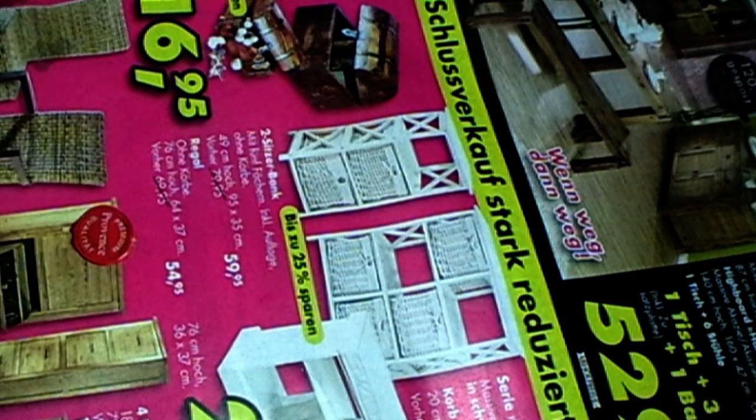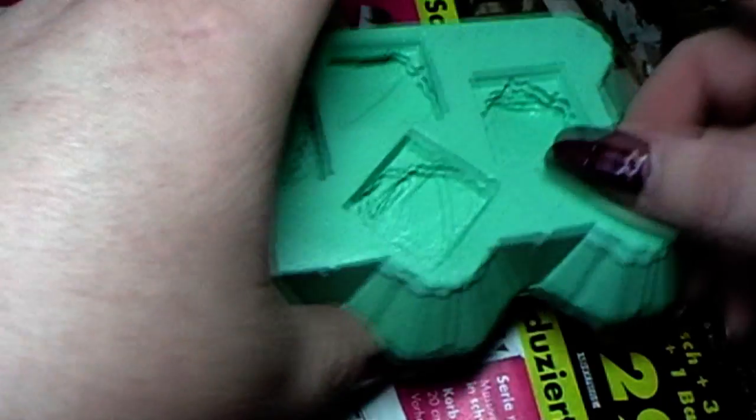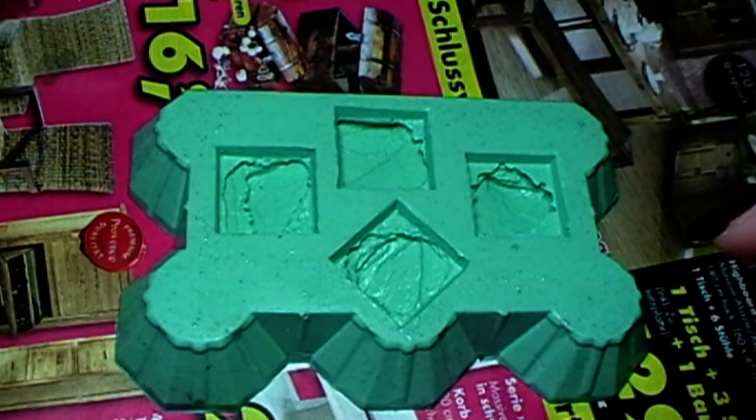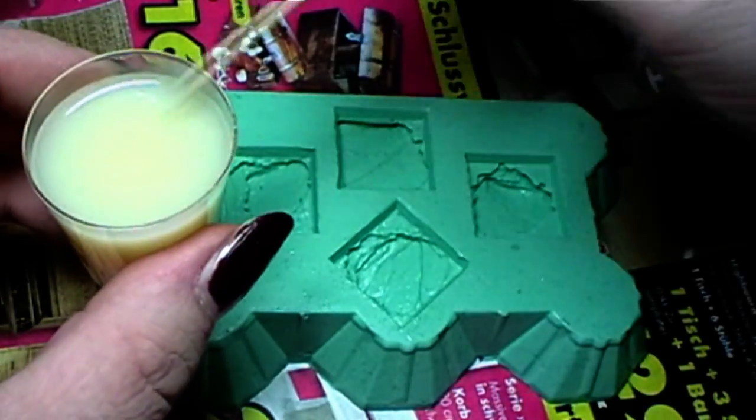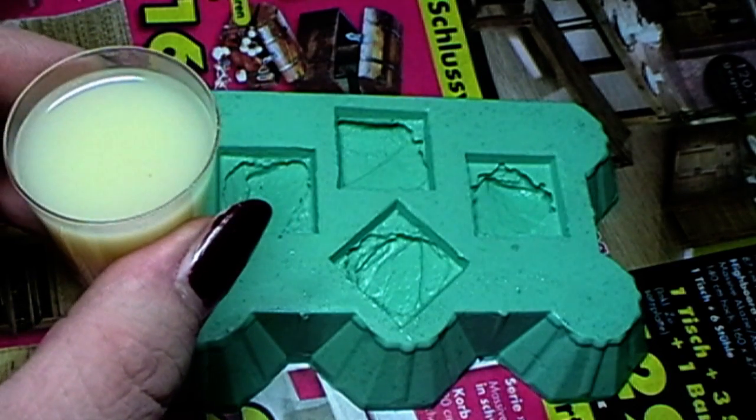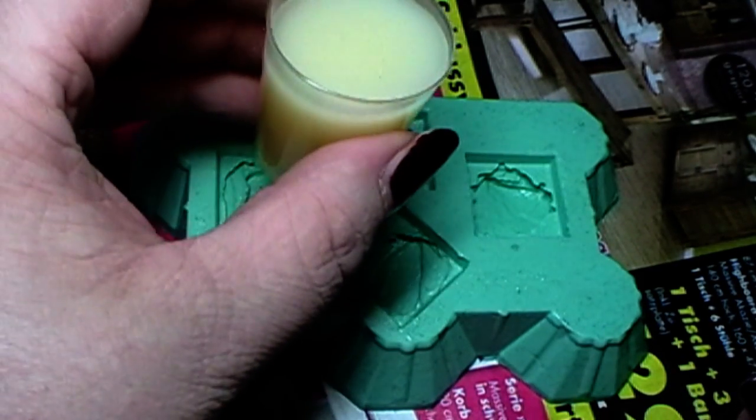You need to work a little bit faster here because the resin will harden quite fast. Normally, mixed resin has a flowability of maybe four minutes. So now it's time to cast it into the mold.